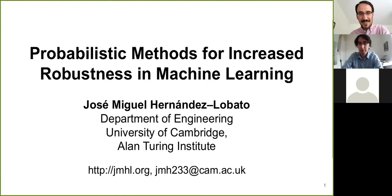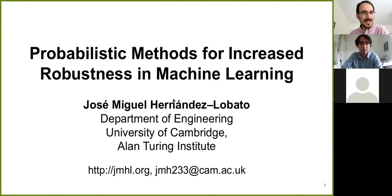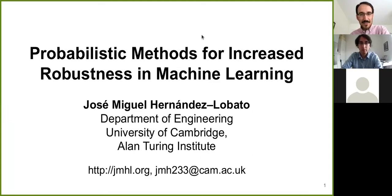Welcome everybody. Today we have Jose Miguel Hernandez Lobato with us. He is a great expert on probabilistic modeling, Gaussian processes, Bayesian neural networks, Bayesian optimization — a topic everybody here has to like. He is currently a university lecturer in machine learning at the University of Cambridge.